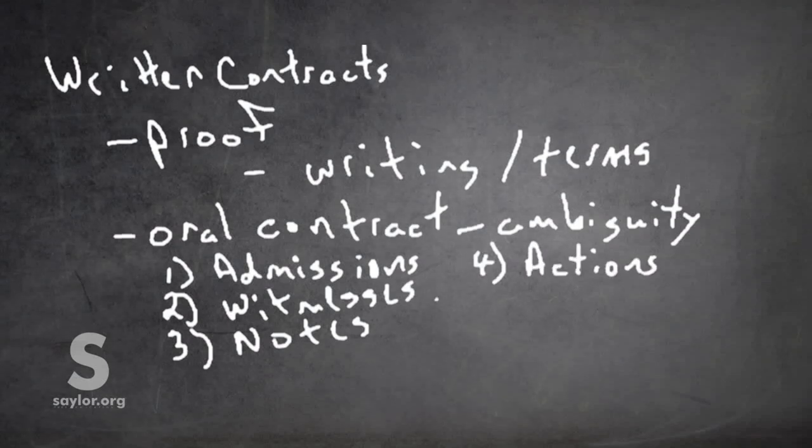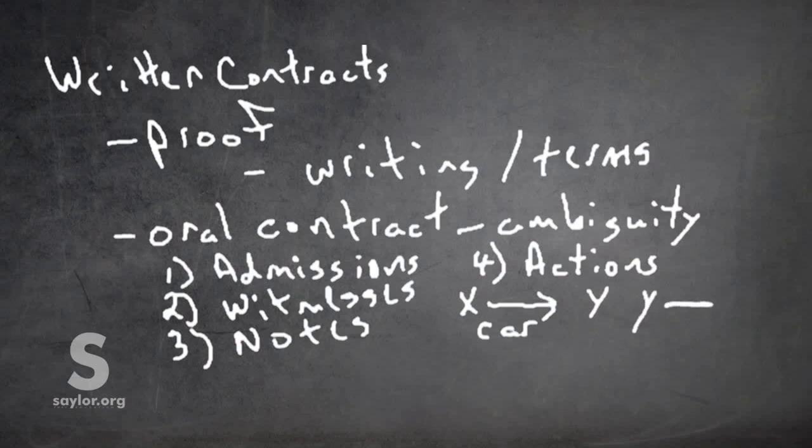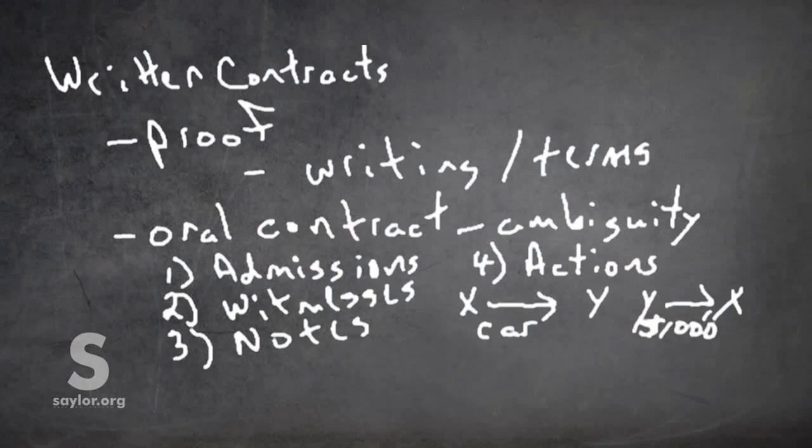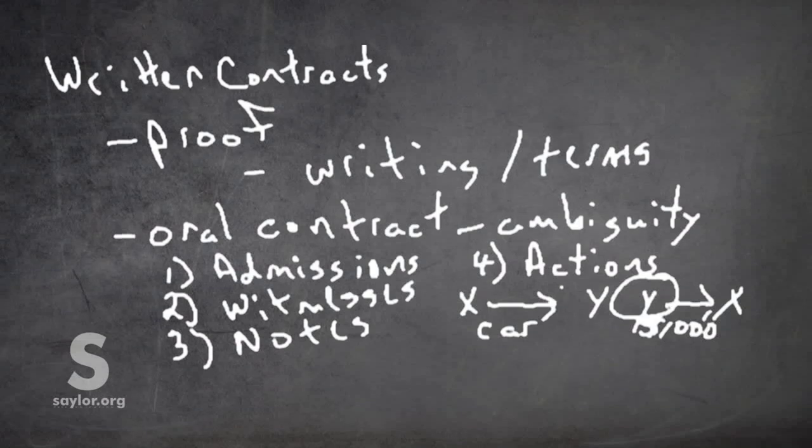For example, X gives Y car. Y gives X $1,000. Let's say there's a problem. The car doesn't work. Y says there's been a breach of contract. An oral contract. The actions of each party here do indicate and probably would to a fact finder that a contract has been made.